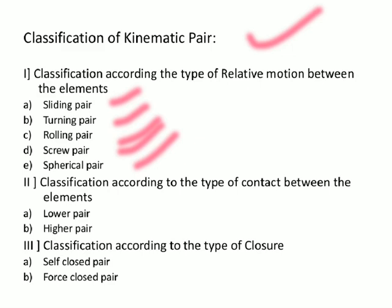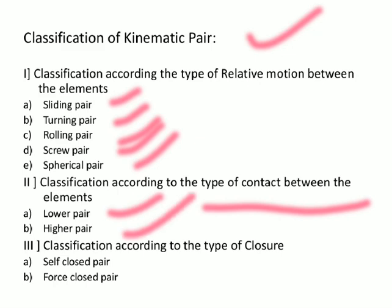If we classify kinematic pairs according to the type of contact between elements, there are two types: lower pair and higher pair. If we classify according to the type of closure, there are also two types: self-closed pair and force-closed pair.